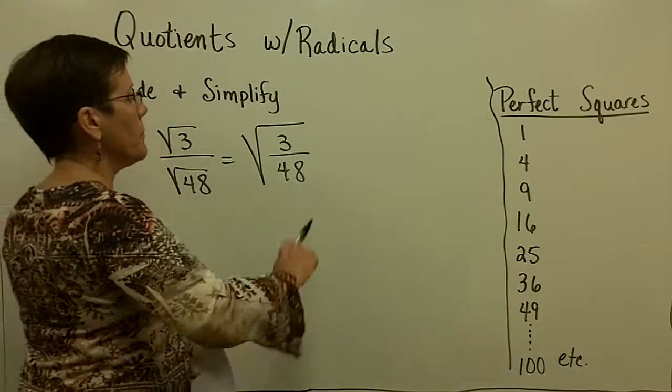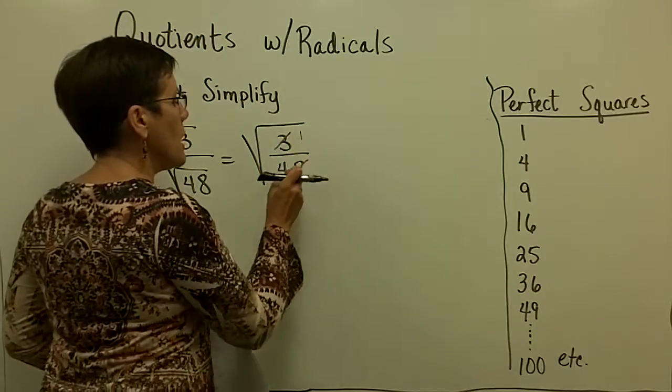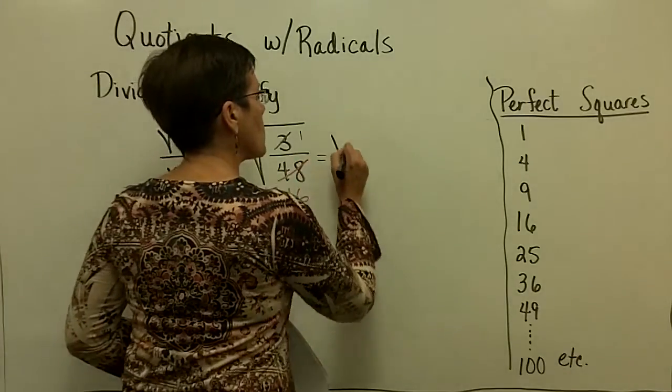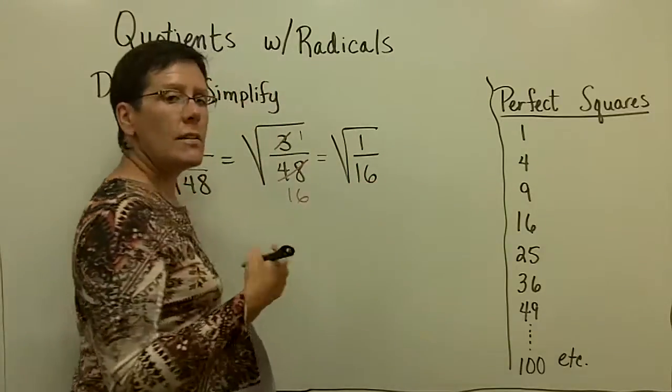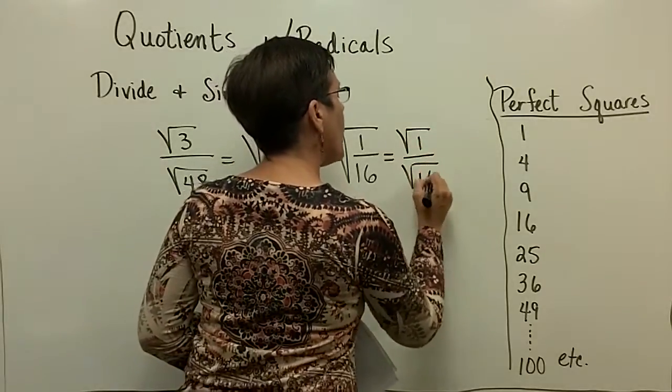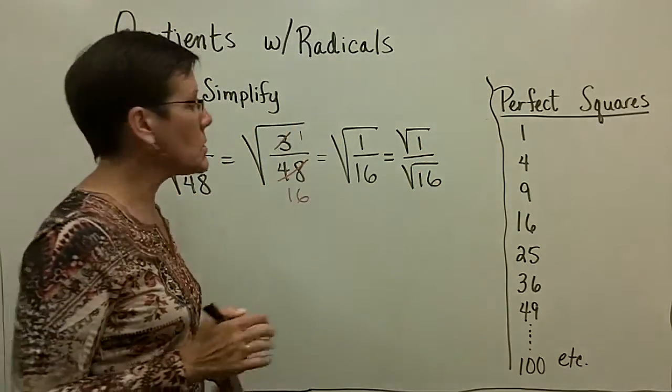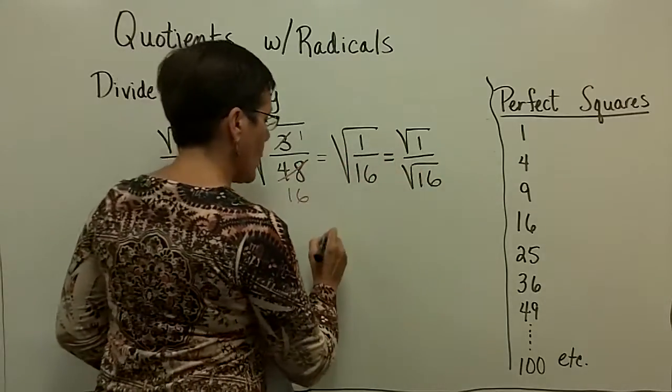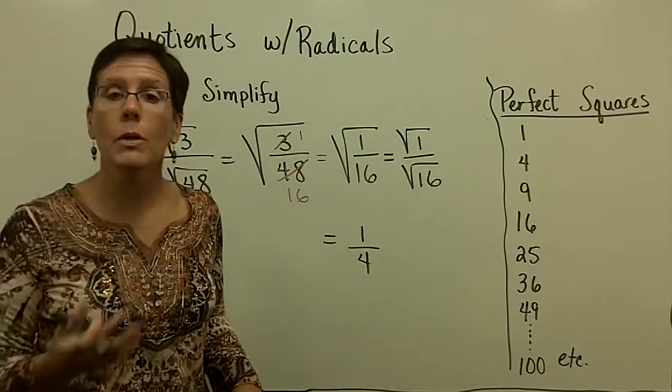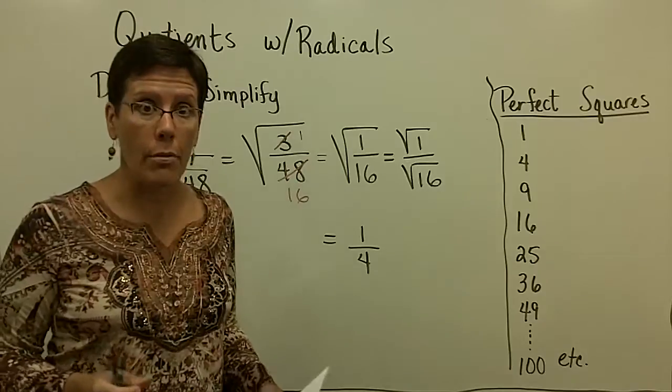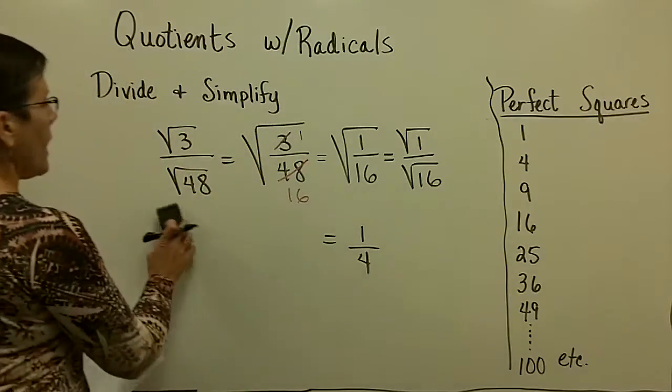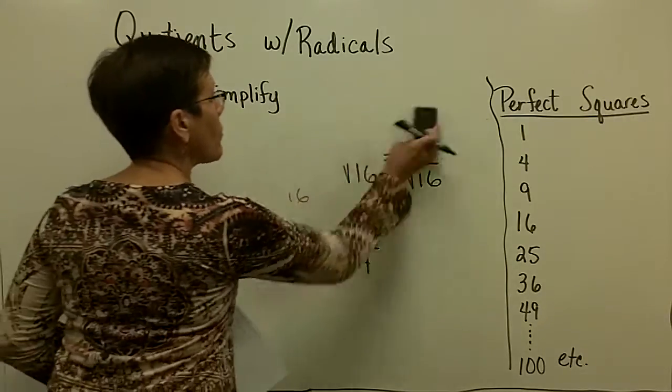For example, we know that 3 goes into the numerator once and it goes into this denominator 16 times. So what you have here is the square root of 1 over 16. And this is a little bit of an exaggeration. You don't need to really write this down. But I want you to know that you can break these back apart. It is the quotient rule for radicals. And you can look at that and say, well, I know that the square root of 1 is 1, and I know that the square root of 16 is 4. And I can simplify that expression into this rational number 1 fourth. So simplify first if it's going to be a fraction, and then go ahead and simplify the radical expression itself.